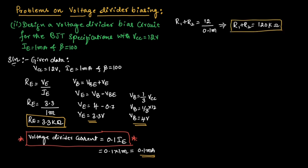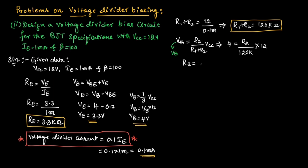Now let us find resistor R2 using Thevenin's voltage formula: VTH equals R2 divided by (R1 plus R2) into VCC. VTH is nothing but VB. Substituting: 4 volts equals R2 divided by 120 kilo ohms multiplied by 12 volts. Solving, R2 equals 40 kilo ohms. Since R1 plus R2 equals 120 kilo ohms, we get R1 plus 40 kilo equals 120 kilo ohms, so R1 equals 80 kilo ohms.